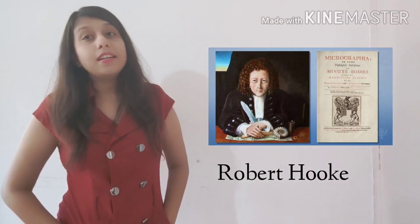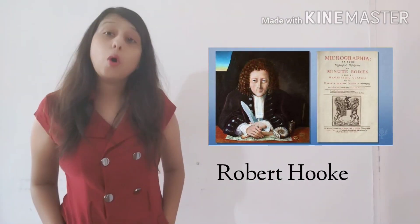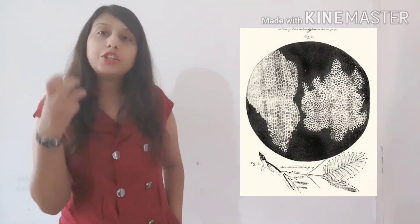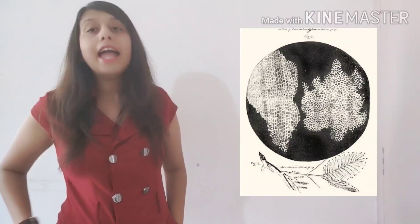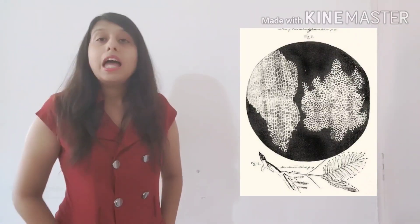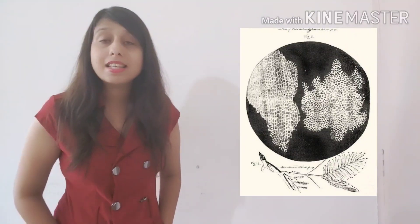An English scientist named Robert Hooke made his own microscope and with his own microscope, he wanted to investigate the structure of cork cells. So what he did was that he actually took a thin slice of cork and investigated and observed it under the microscope. Now when he observed it, he saw very tiny compartments and named them as cells.